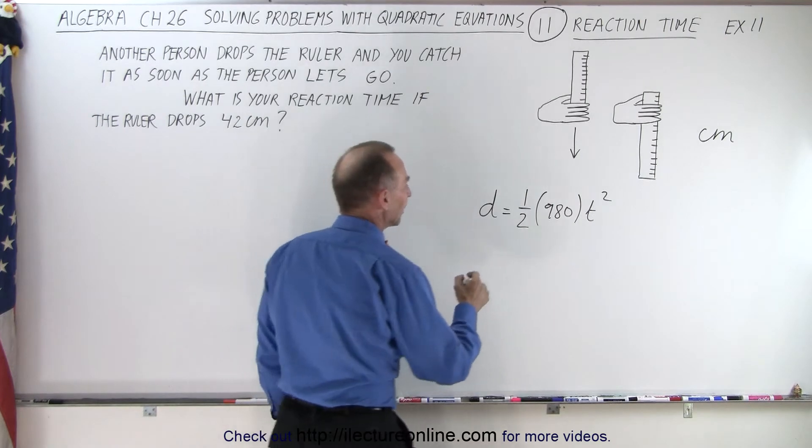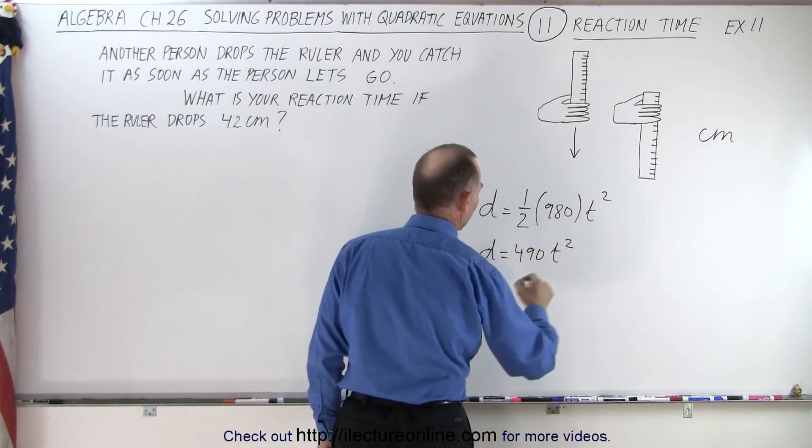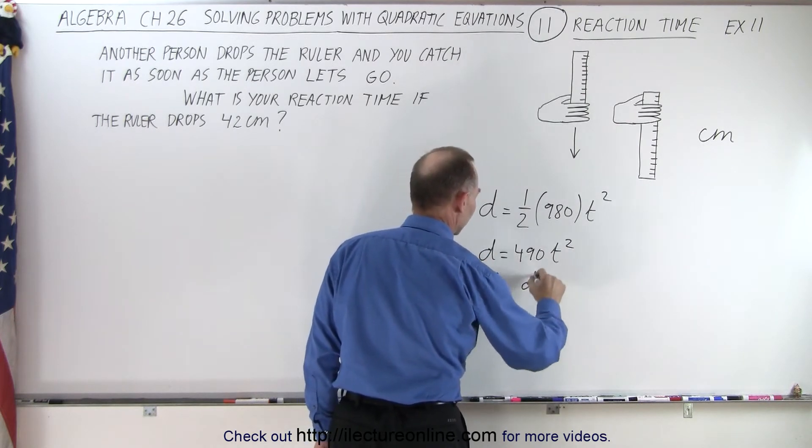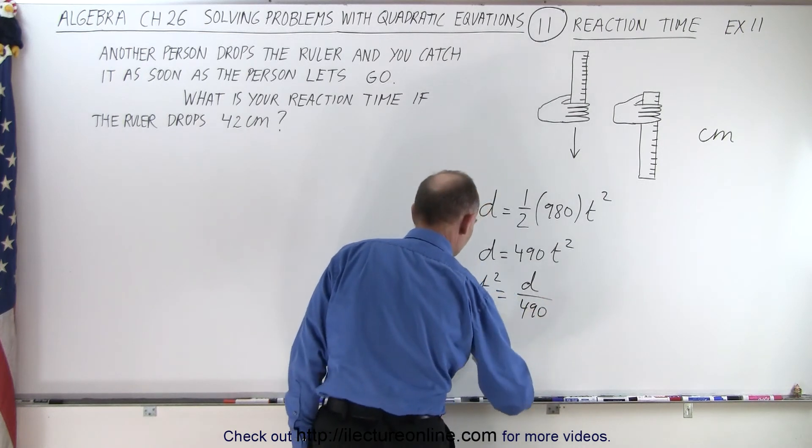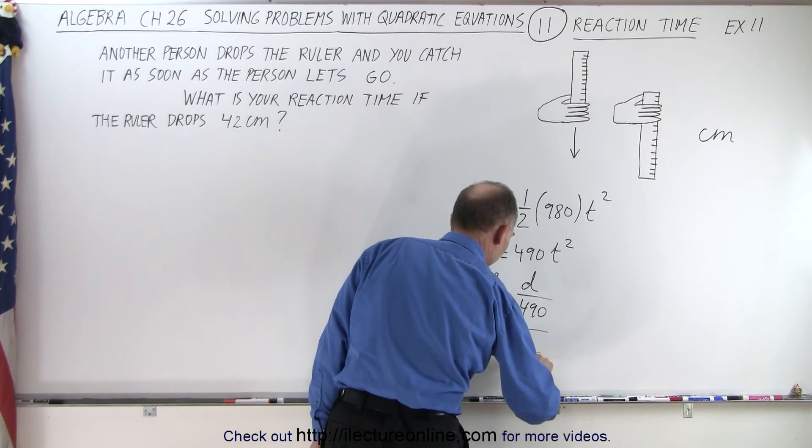So that means that distance equals 490 times T squared, or you could say that T squared is equal to distance divided by 490, or T is equal to the square root of distance divided by 490.